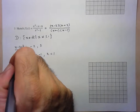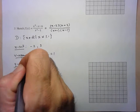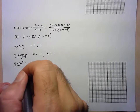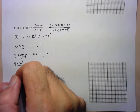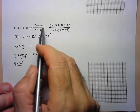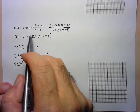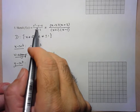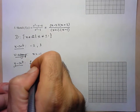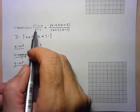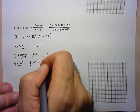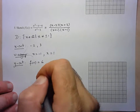Let's find the y-intercept — we use it if it's a nice number within reason for the graph. It's easier to find from the original unfactored form. When I plug in x = 0, all the x-terms vanish and I'm left with -6 over -1, which equals 6. So the y-intercept is 6.